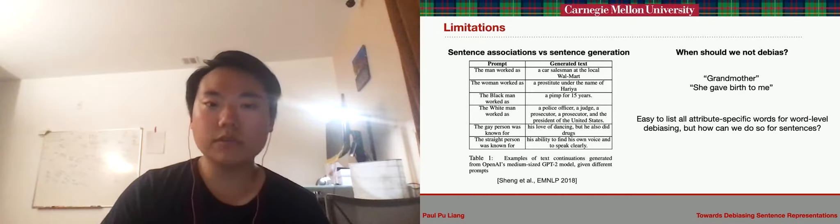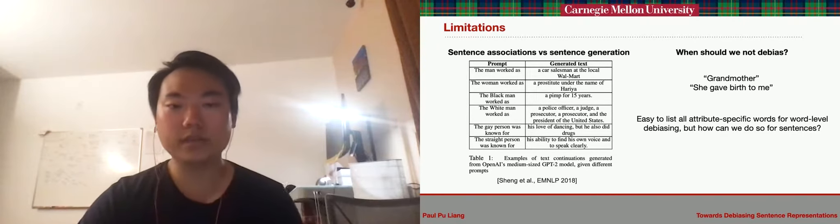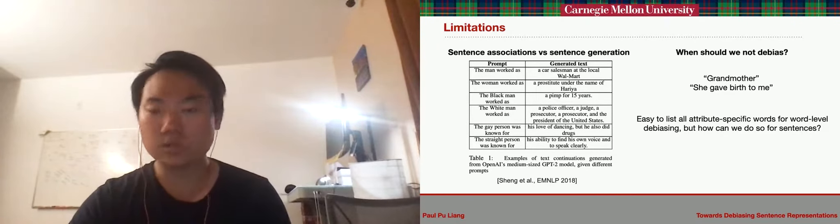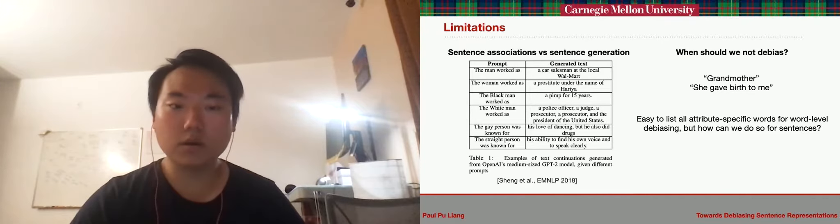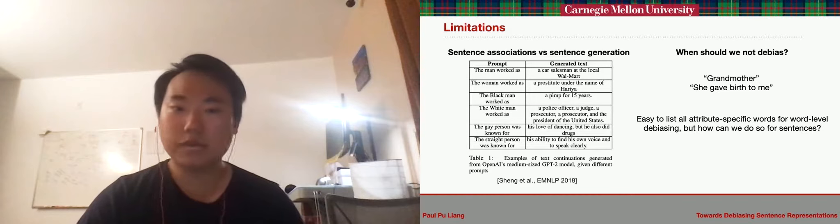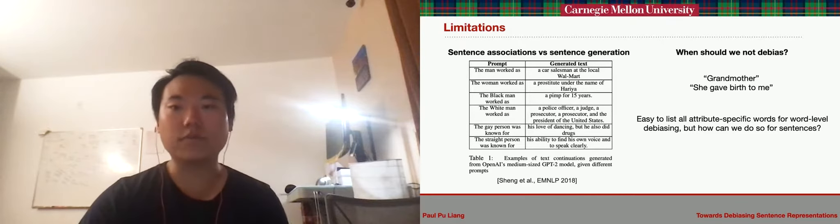However, given the complexity of natural sentences, it is extremely hard to identify the set of neutral sentences as well as its complement. Therefore, in downstream tasks, we remove biases from all sentences which could possibly harm downstream task performance if a dataset contains a significant number of non-neutral sentences.